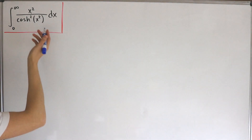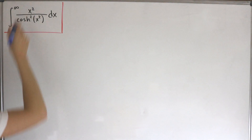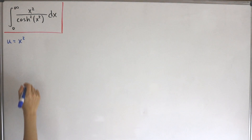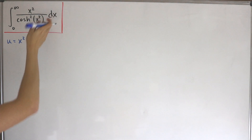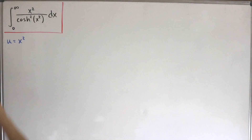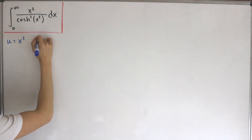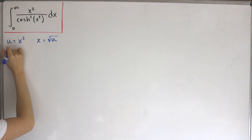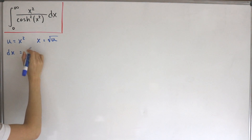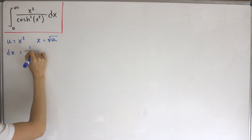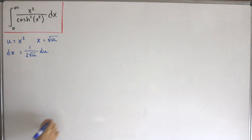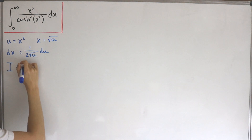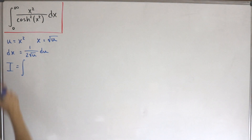We'll do our u-substitution. We can see we have x squared, so we let u equal x squared. Solving for x on its own gives x equals the square root of u. Differentiating both sides gives dx equals 1 divided by 2 times the square root of u, then du. Now substituting back, our new integral — call it capital I — keeps the bounds zero to infinity.